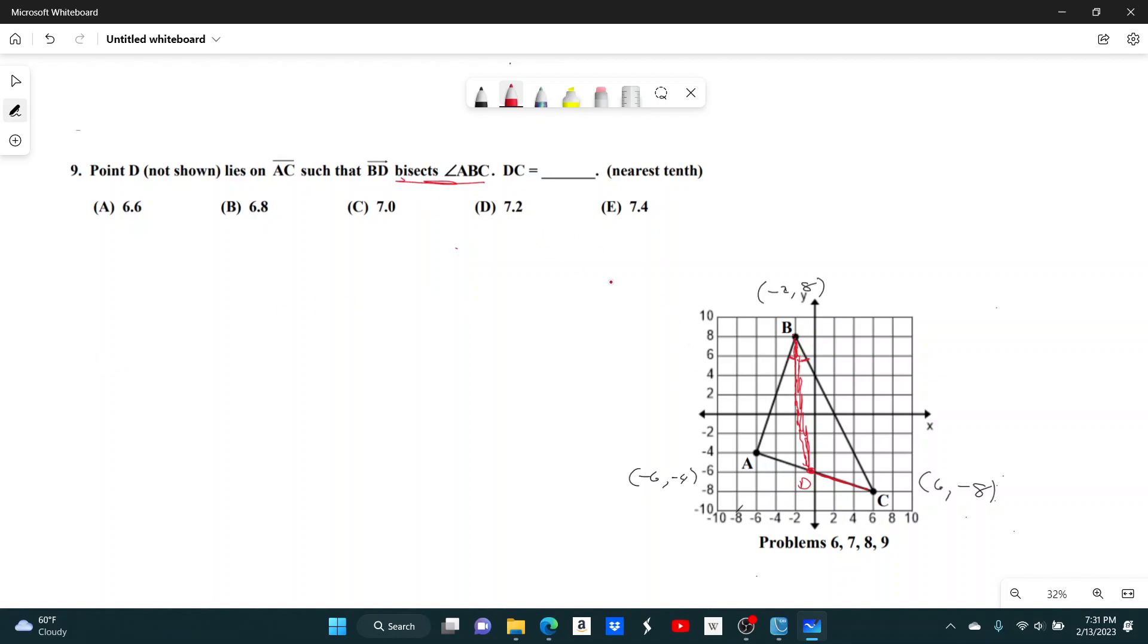So, to use the angle bisector theorem, basically what it says is, let's say, let's use this angle right here. It says that the side adjacent to it, so that would be AB, divided by the side opposite from it, which would be AD.